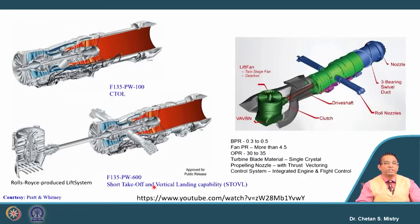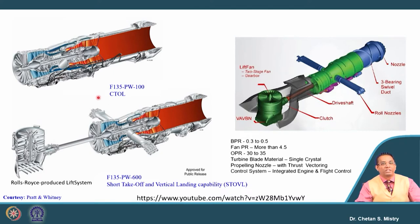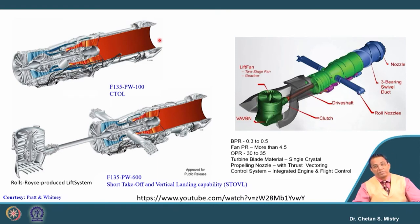Let us look at the fifth generation engine — the F135 — which was designed and developed by Pratt and Whitney. They have multiple configurations. One is the conventional takeoff and landing configuration: we have a fan followed by a bypass duct, HP compressor, HP turbine, LP turbine, followed by an afterburner, and a special convergent-divergent nozzle. This convergent-divergent nozzle is used for vertical takeoff.